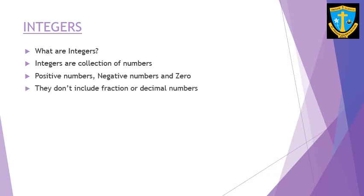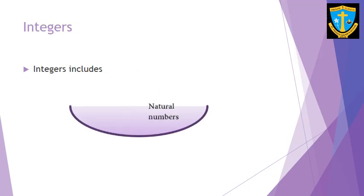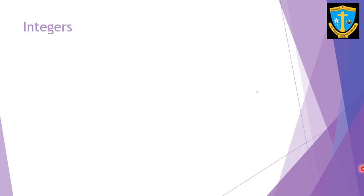Integers do not include any fractions or decimal numbers. Here are some examples of integers: positive numbers, zero, and negative numbers. Non-integers are not part of the group of integers because they are decimal numbers or fractions. So we can conclude that integers are a set of natural numbers — also called counting numbers like 1, 2, 3, 4 and so on — zero, and negative numbers.